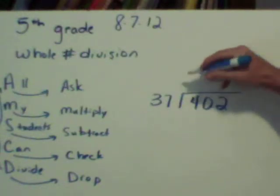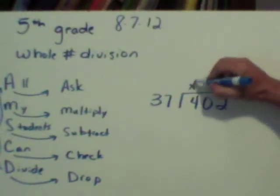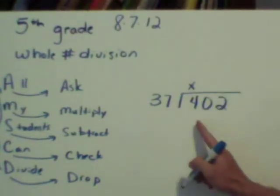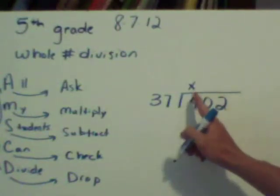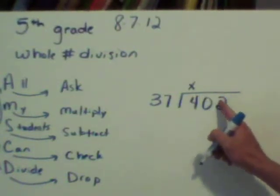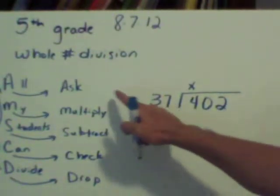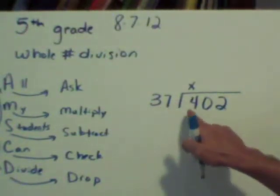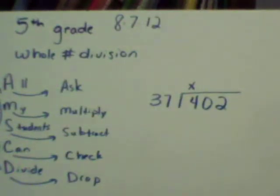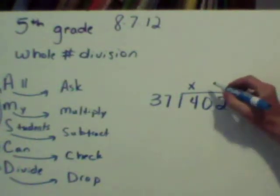So what I'm going to do is I'm going to put a little X right above that 4 because when I'm finished, I want to have a number above every single digit in this problem. So now I'm going to go back and ask again, how many times will 37 go into 40? Well, it will go in there one time.